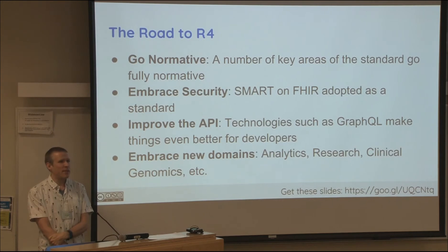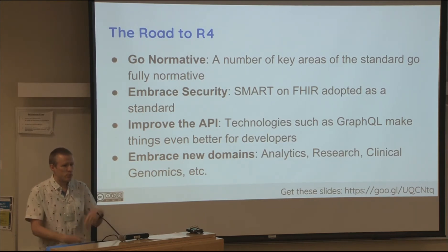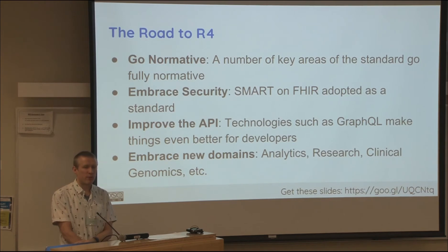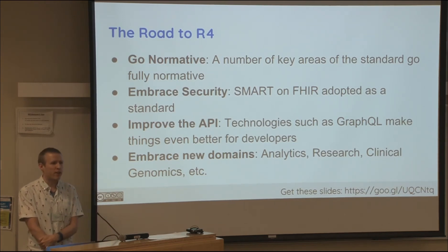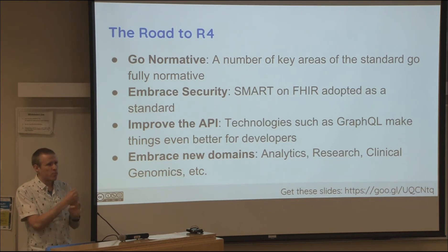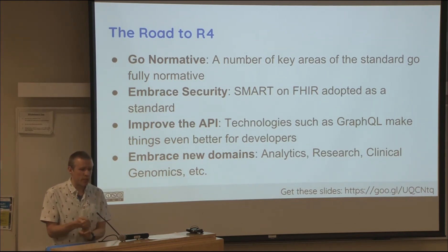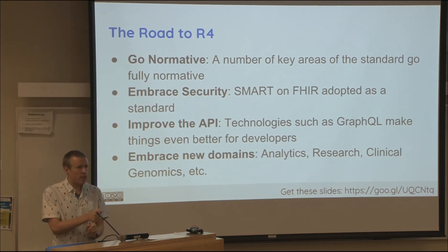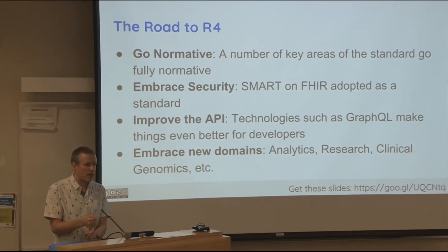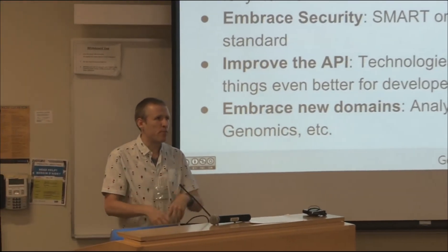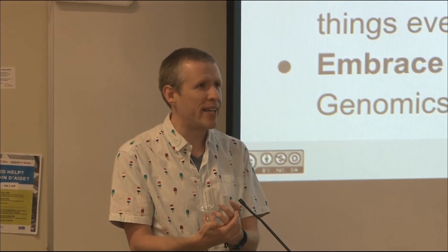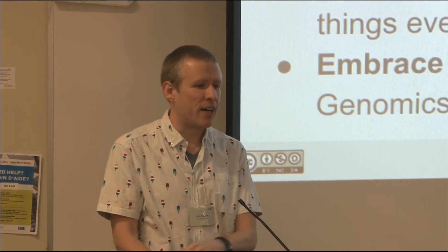What's coming up with FHIR in the next while? These bullet points are from the FHIR product roadmap — our main priorities in the next 18 months as we reach towards FHIR Release 4. First, R4 is going to be the first time any parts of the standard are normative — truly not allowed to change any further. A few key areas, mostly the encodings and a few key resources, will be marked as normative from R4 on. October 2018 should be the first time any content is fully normative.